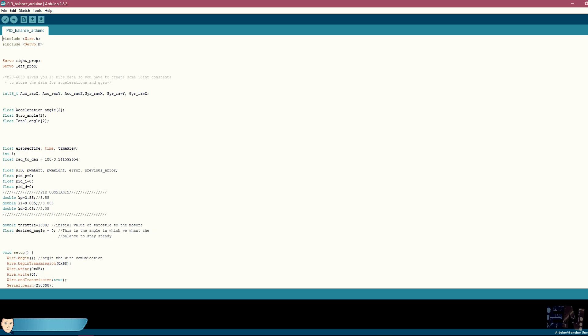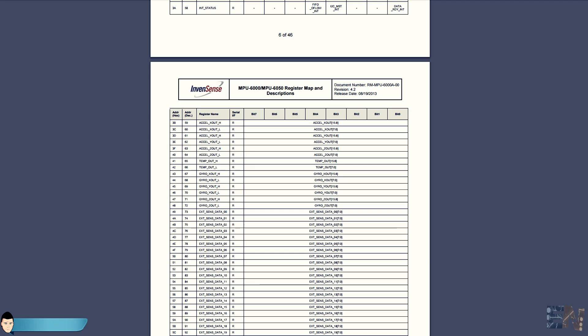The first thing to do is to import the libraries and define our motors, the right and the left one. If we study the MPU6050 datasheet and the register map, we will see that it will give us 3 values for the acceleration and 3 values for the gyro data.